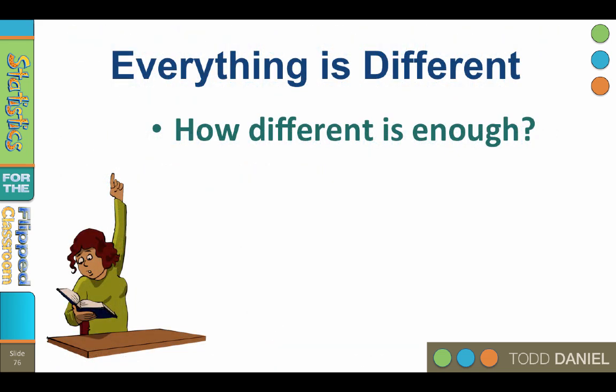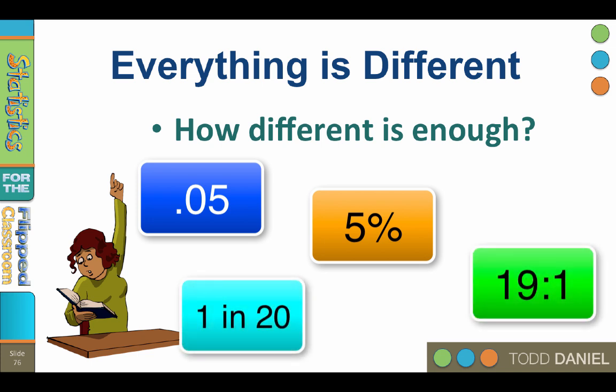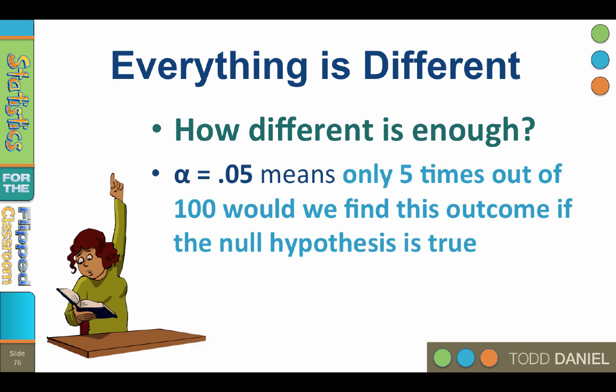So how different do the means need to be for us to conclude that they were statistically significantly different? Ah, that is the question. As a field, we have settled on a significance level of 0.05, or 5%, or 1 in 20, or 19 to 1 odds. Alpha equals 0.05 means that only 5 times out of 100 would we find this outcome if the null hypothesis was true.